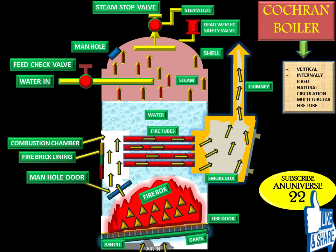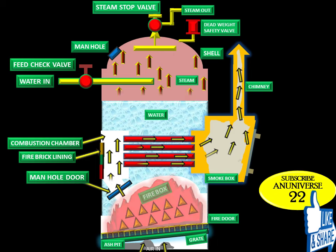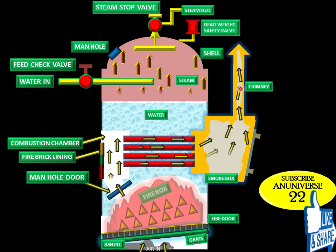The dead weight safety valve prevents an increase of steam pressure in the boiler above its normal working pressure. Coal is fed in the firebox, gases flow from the firebox to the combustion chamber, then through the fire tubes where heat is transferred to the water by convection. Water is converted into steam, and the flue gases finally pass to the atmosphere through the chimney.